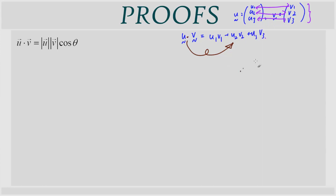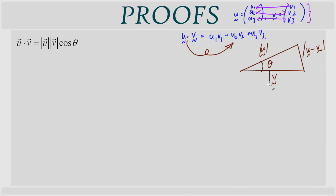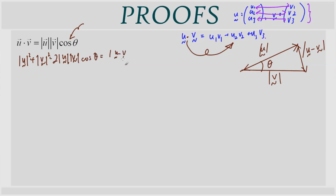We first need to define what the scalar product is before explaining why this operation is defined this way. The scalar product involves two vectors u and v on the same plane making an angle θ with one another. They form a triangle with sides u, v, and u−v. We then apply the cosine rule to extract cosine θ. So: |u|² + |v|² − 2|u||v|cosθ = |u−v|².